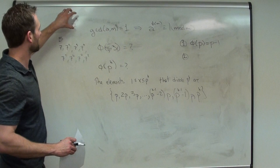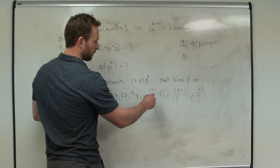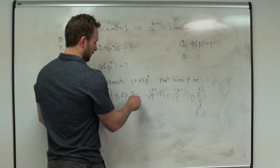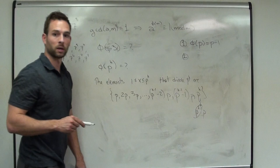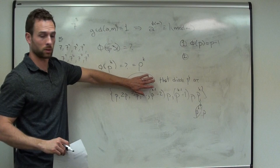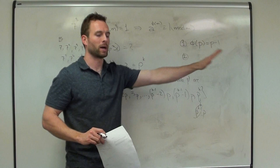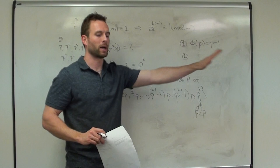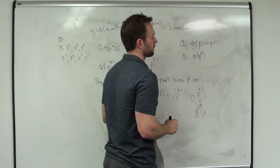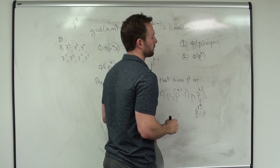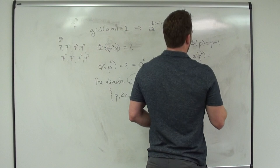How many of these are there? We have p, 2p, 3p, ... all the way up to p^(k−1) times p, so there are p^(k−1) of them. What we're going to do: how many numbers are in this set total? We know there are p^k numbers total that are ≤ p^k. When we do the ones that are co-prime, we subtract the ones that have common factors — namely p^(k−1) have common factors. So phi(p^k) = p^k − p^(k−1). That formula is really helpful.